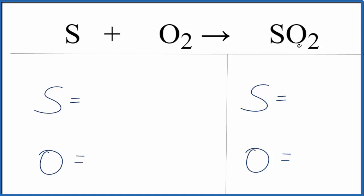When we're balancing equations, we want the numbers of sulfurs to be the same on each side and the number of oxygen to be the same on each side. So we kind of set up this accounting network here so that we can figure that out easily.